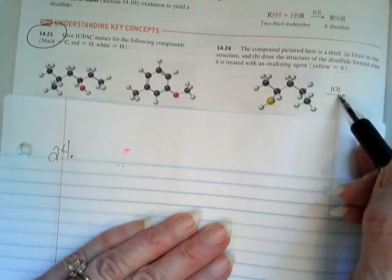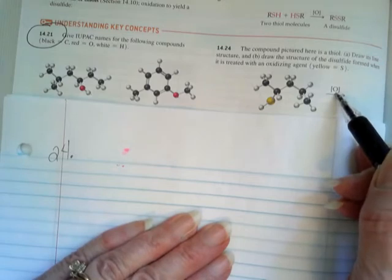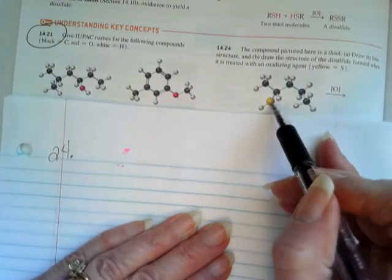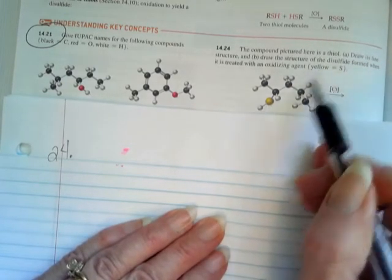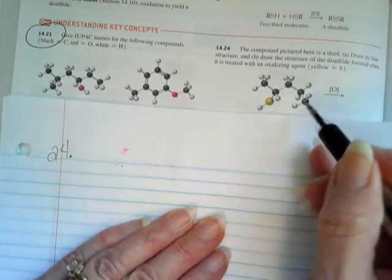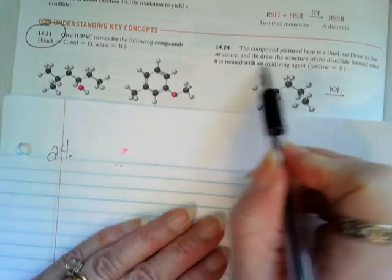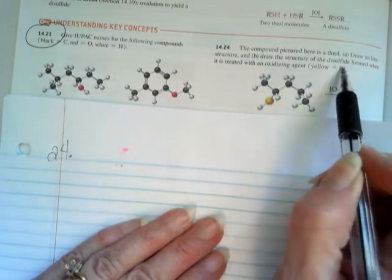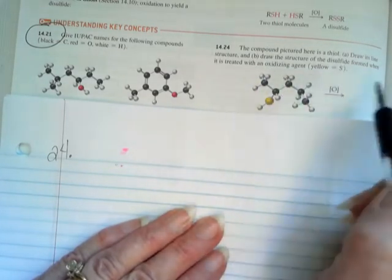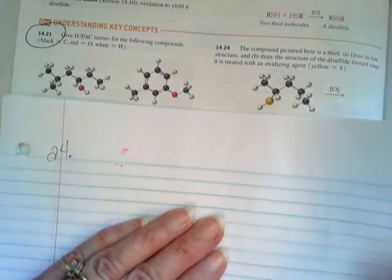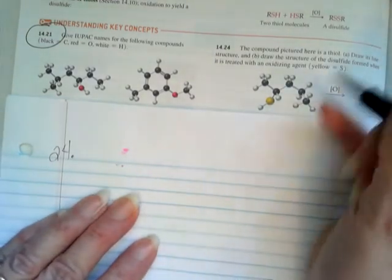Number 24 is oxidation because we've got the O in brackets up here of a thiol, because the yellow is sulfur. It wants to know two things: draw the line structure, and draw the structure that will be formed. We're going to take it step by step.